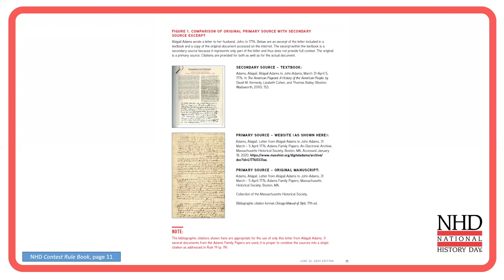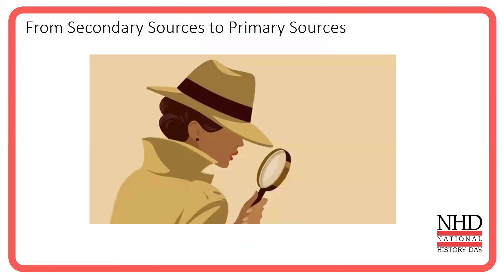However, we're going to encourage students to trace these back to find the full primary source — the full text of the letter or the speech, the original photograph, lithograph, or painting. We want to make sure students see the whole picture: not just an excerpt of a presidential speech, but the entire speech; not just part of a painting, but the entire painting. Doing that involves a little bit of detective work, so let's talk about some strategies to help you do that.